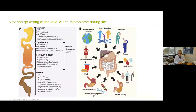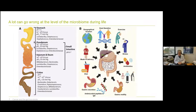A lot can go wrong at the level of the microbiome during life. Lack of exercise, stress, and antibiotics change the microbiome, as does older age and decreased gastric motility. Our diet substantially changes the microbiome, as does even the mode of delivery — a normal vaginal delivery results in a totally different microbiome compared to a cesarean section, and this can affect the microbiome in later life. Genetic effects of the host also play a role.